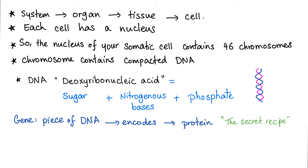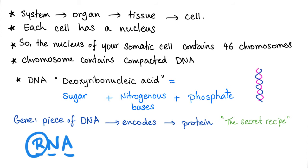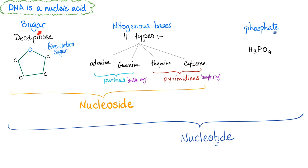The sugar has to be deoxyribose. How about just ribose sugar? That's RNA, not DNA, because RNA — ribonucleic acid — has ribose, but DNA is deoxyribose. So DNA has deoxyribose sugar plus nitrogenous bases plus phosphate.